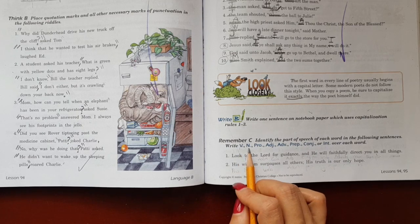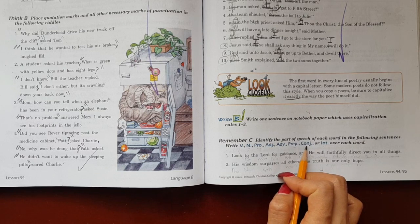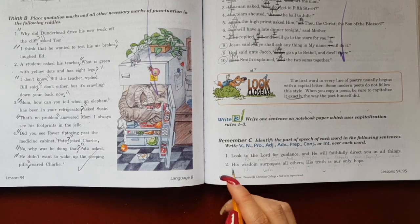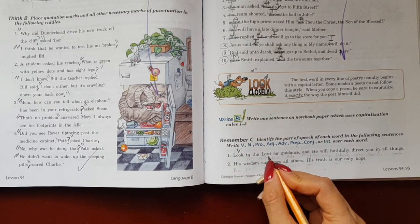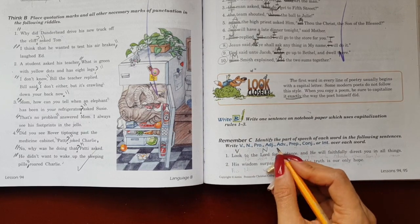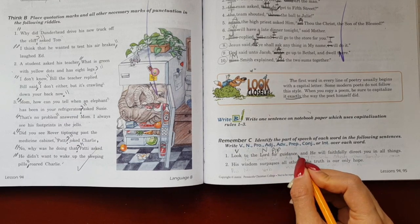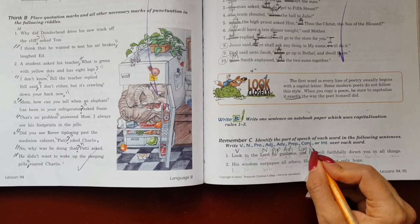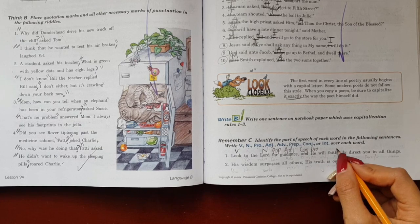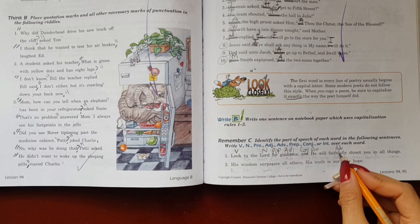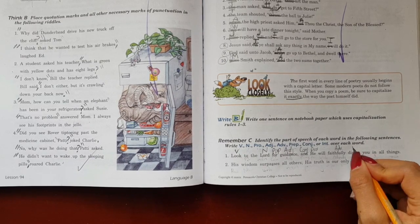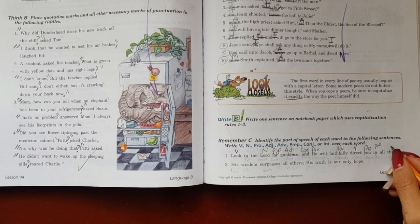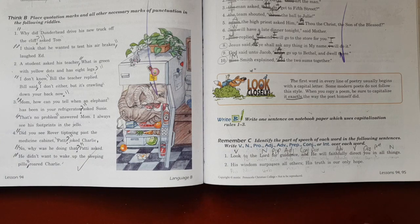We have the eight parts of discourse. Verb, noun, pronoun, adjective, adverb, preposition, conjunction or connector, interjection. Do you remember the interjection? When it is, is a feeling, it's a sudden feeling. So look, it is a verb. Look to the Lord, noun, for, it is a preposition, for guidance, adjective, and conjunction. He, pronoun, will faithfully, adverb, here, adverb, will direct, it is the verb. You, pronoun, in, preposition, all things, noun.